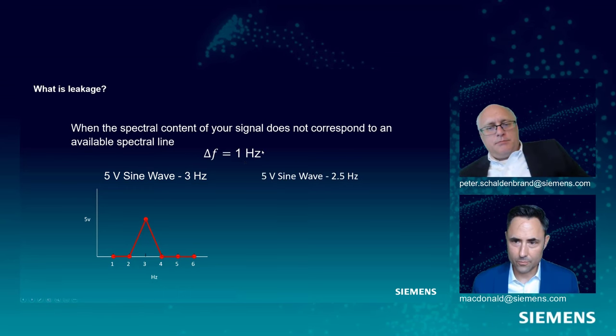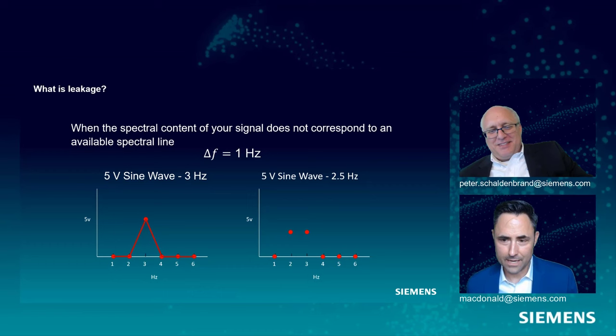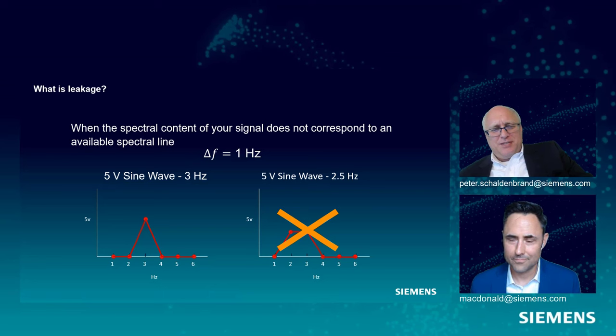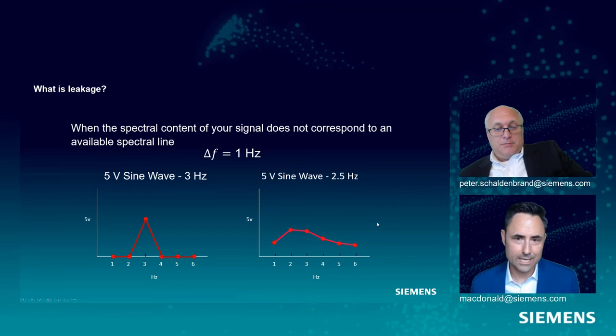What if I then told Pete with his 1 hertz delta F to go measure a 2.5 hertz sine wave? What is he going to do? Well, we don't have a spectral line at 2.5 hertz. It's not going to get nicely evenly divided between the 2 and the 3. Ultimately, it's not what happens. When we have this leakage, we don't just get a nice, easily solved problem. What we end up with is spectral energy leaking across all spectral lines of our frequency spectrum, and we cannot figure out what the frequency content was. So we need to avoid leakage at all costs. It doesn't disappear, and it doesn't just go into the adjacent spectral lines. It goes everywhere across the frequency range.